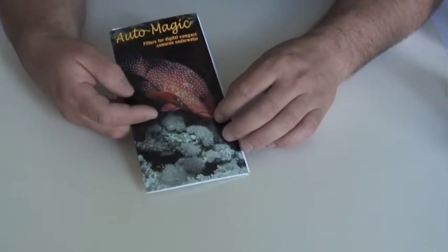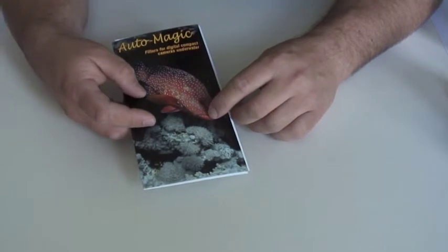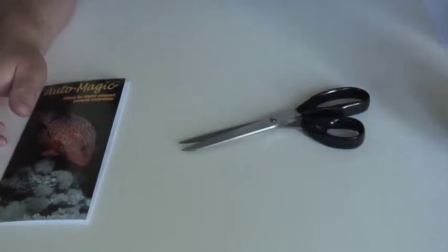The aim of this short video is to show you how to fit the auto magic filter to your camera. To do this you need a pair of scissors and some tape.